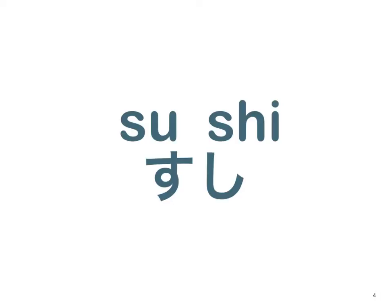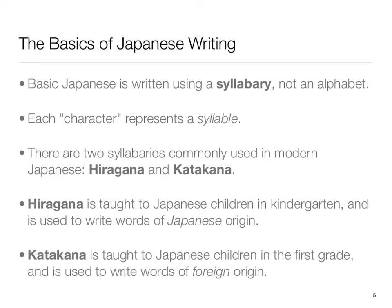Japanese, then, is written in syllables rather than in individual letters like our English alphabet. Basic Japanese is written using a syllabary and not an alphabet. In an alphabetic writing system like our own, we need to build syllables using individual alphabetic characters. For example, when we spelled sushi a moment ago, it took us five alphabetic letters to do so: S-U-S-H-I.